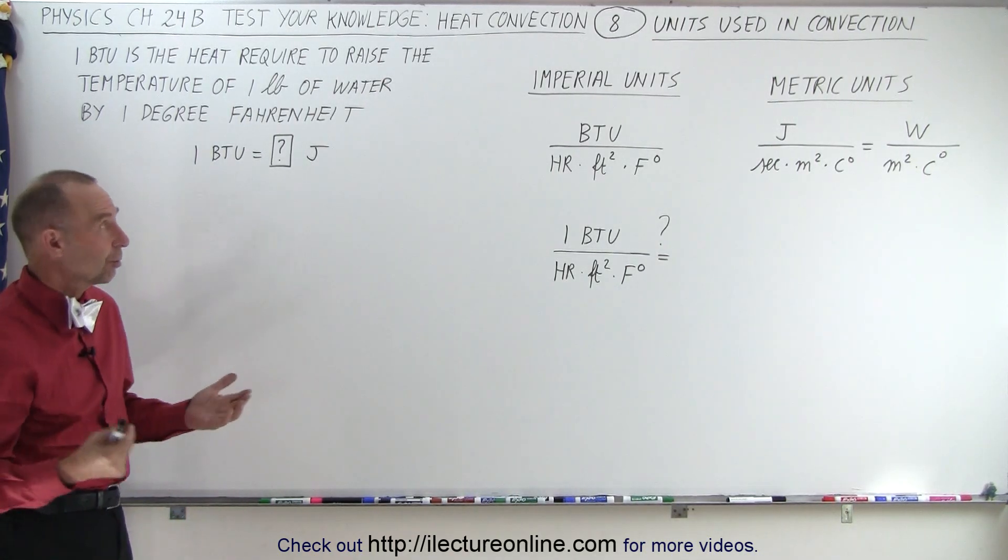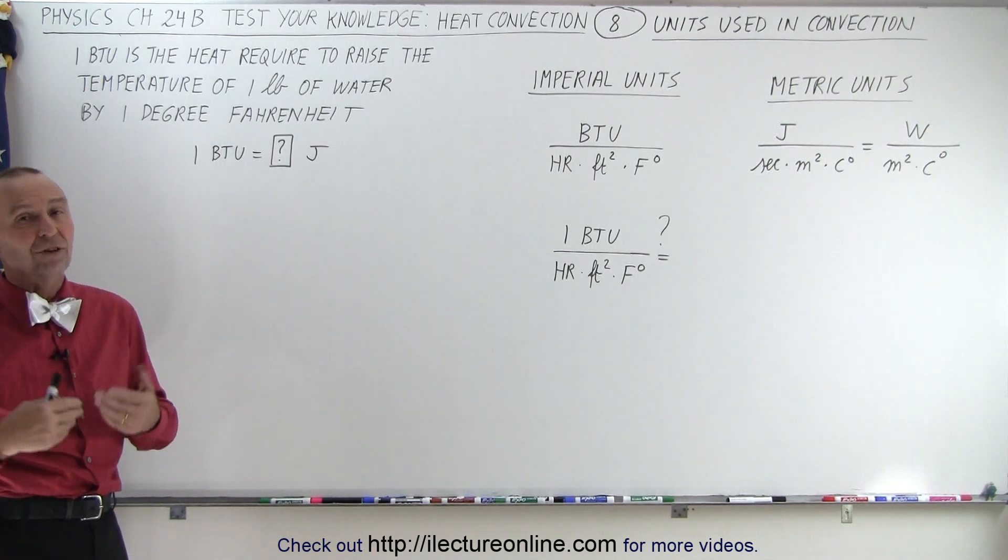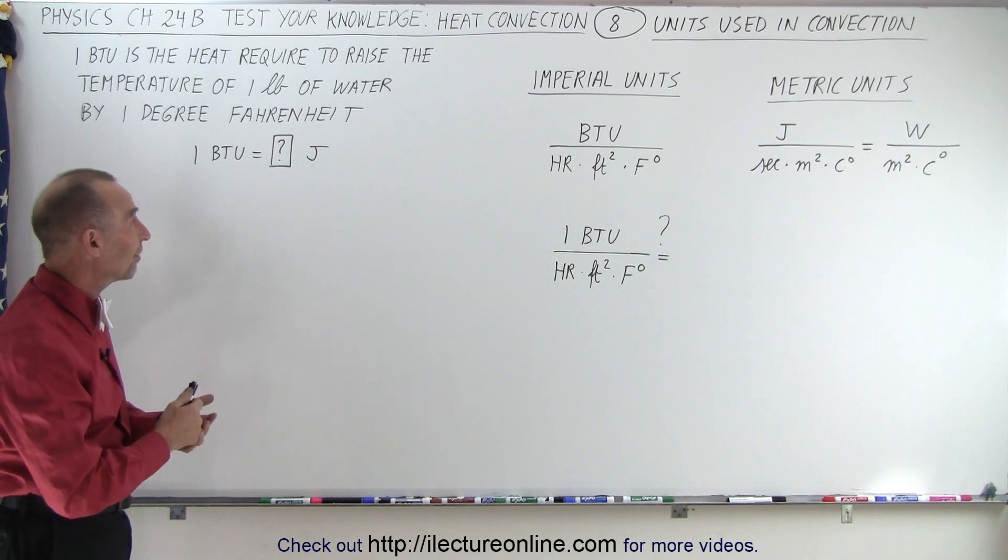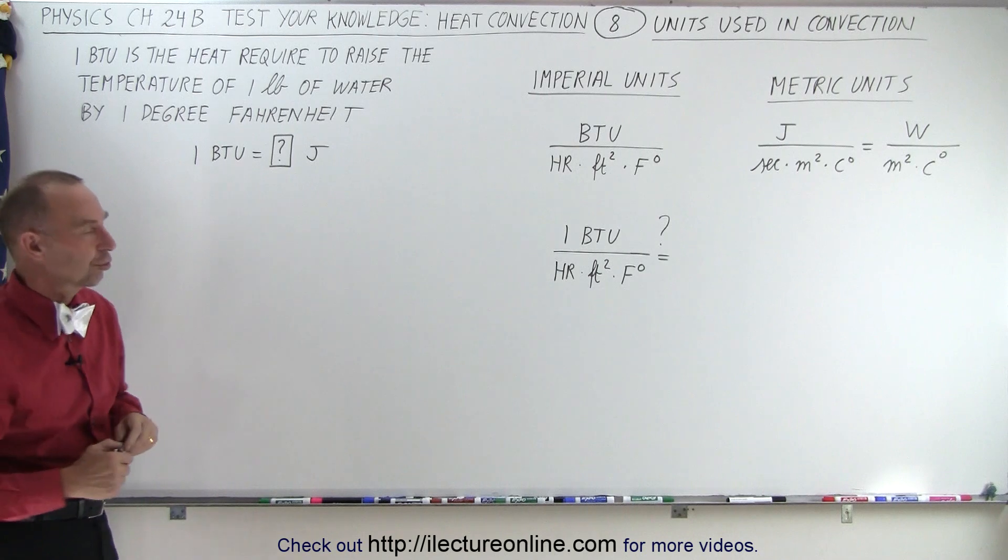Now the relationship between degrees Fahrenheit and degrees Celsius is nine to five. There are nine Fahrenheit degrees for every five Celsius degrees. So let's first find out what the BTU is and then do the conversion.